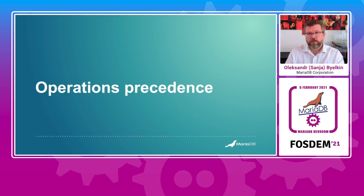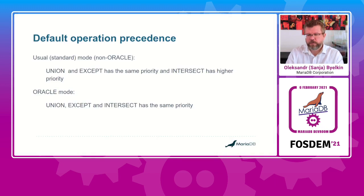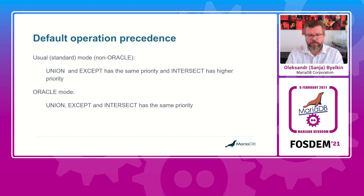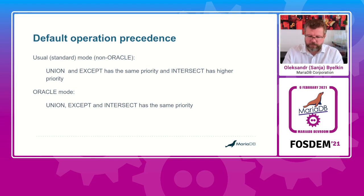But if we have many operations — at least three — we have to think about the order in which they will be executed. According to the standard, INTERSECT has higher priority than UNION and EXCEPT, and UNION and EXCEPT have the same priority. You can think of it like mathematical operations: UNION is addition, EXCEPT is subtraction, and INTERSECT is multiplication — the priority is the same as the analogues.